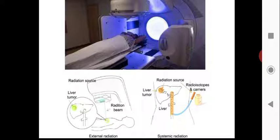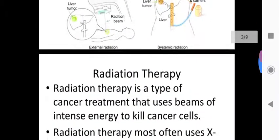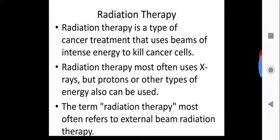In systemic radiation therapy, you are advised to swallow a tablet. That tablet consists of radioisotopes, and this radioisotope will travel inside to the affected organ, such as the liver, and cause radiation inside it to destroy the cancer. This type of treatment is called systemic radiation therapy.